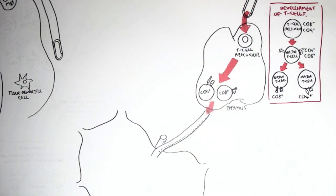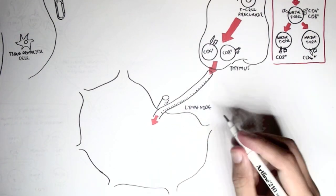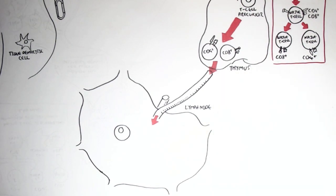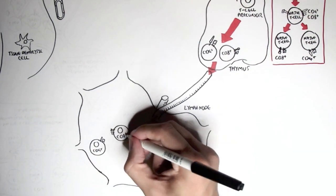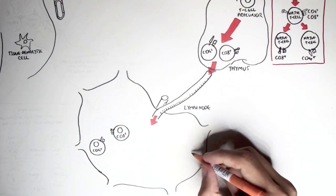And then from the thymus, these naive T cells, the CD4 and CD8 naive T cells, will go and travel through the bloodstream into the peripheral lymphoid organs, such as the lymph node. And they are situated in the paracortex.